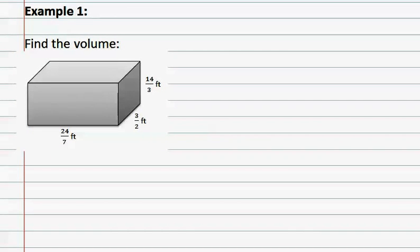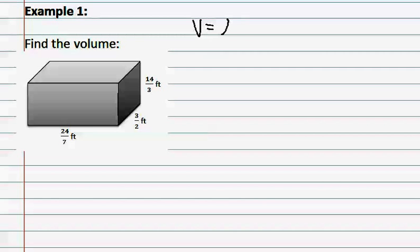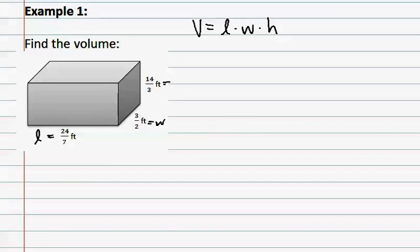Example one shows a rectangular solid. We will be finding the volume of this shape. Remembering that the volume formula is length times width times height, we will therefore label the length, the width, and the height in the figure. We can now set up our equation.